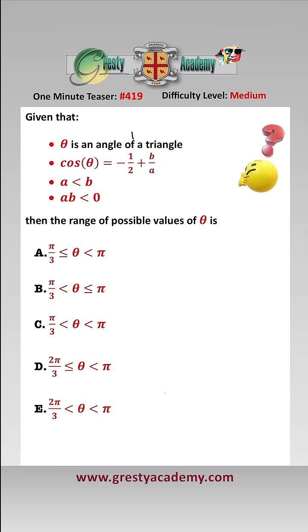We need to be careful with our inequality. So first of all, as theta is an angle of a triangle, we know that it must be greater than 0 and less than pi by definition.